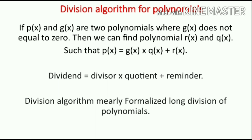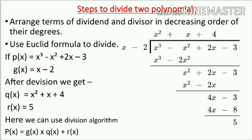The division algorithm of polynomials states: if p(x) and g(x) are two polynomials where g(x) does not equal zero, then we can find polynomials q(x) and r(x) such that p(x) = g(x) × q(x) + r(x). This mirrors the integer rule: dividend = divisor × quotient + remainder, and is used in long division of polynomials.